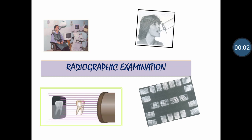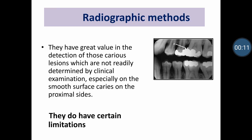Good morning. This is a continuation class for clinical diagnosis of dental caries, in which we will be learning about radiographic methods for diagnosing caries. Radiographic methods have greater value in the detection of caries lesions which are not readily determined by clinical examination, especially smooth surface caries on the proximal side. These are problematic or hidden areas where we do not have direct visual access to the proximal surfaces; such areas, subgingival areas, or root caries can be detected by radiographic methods.